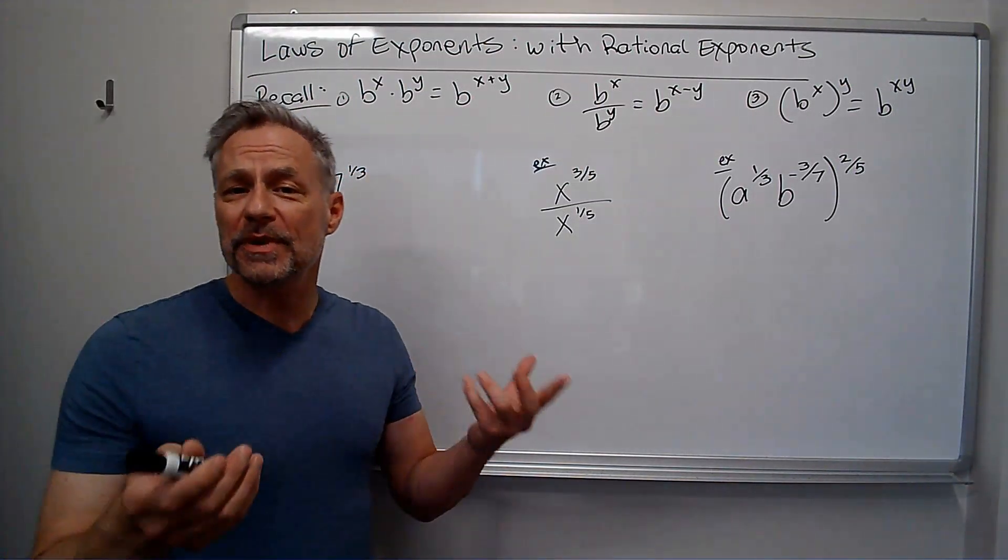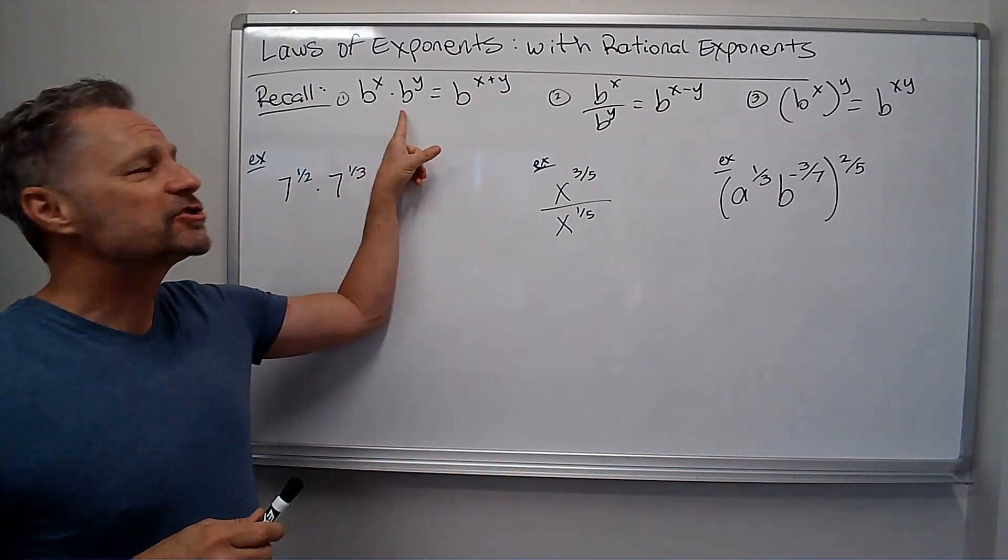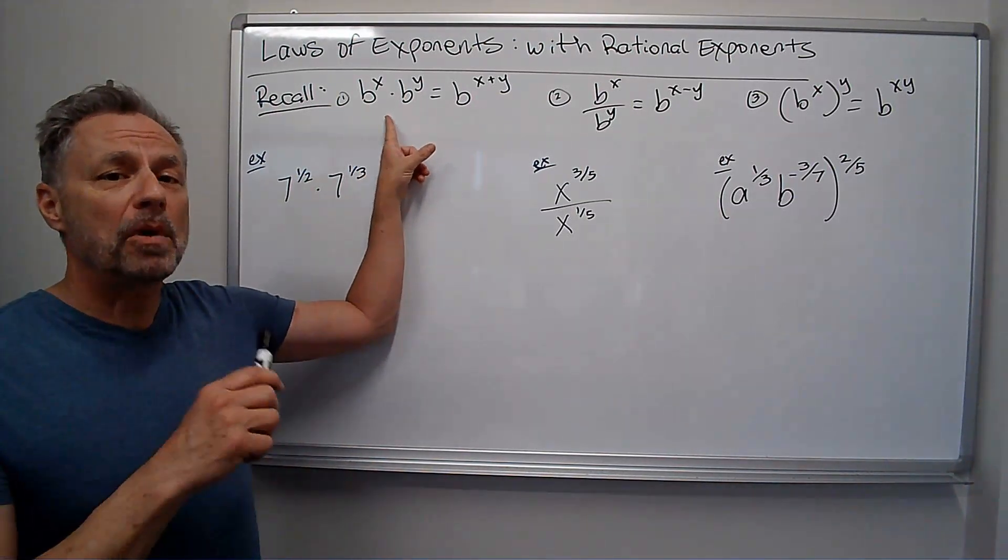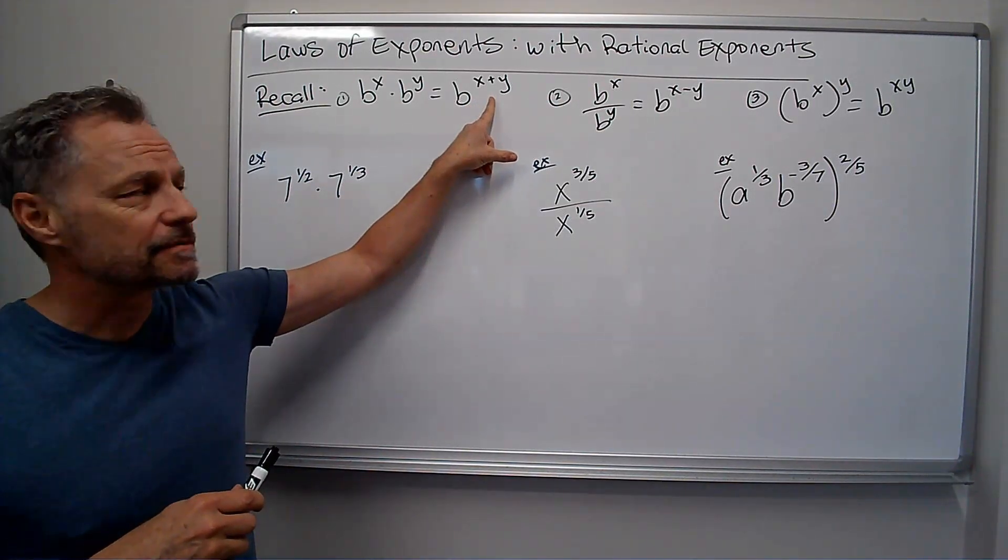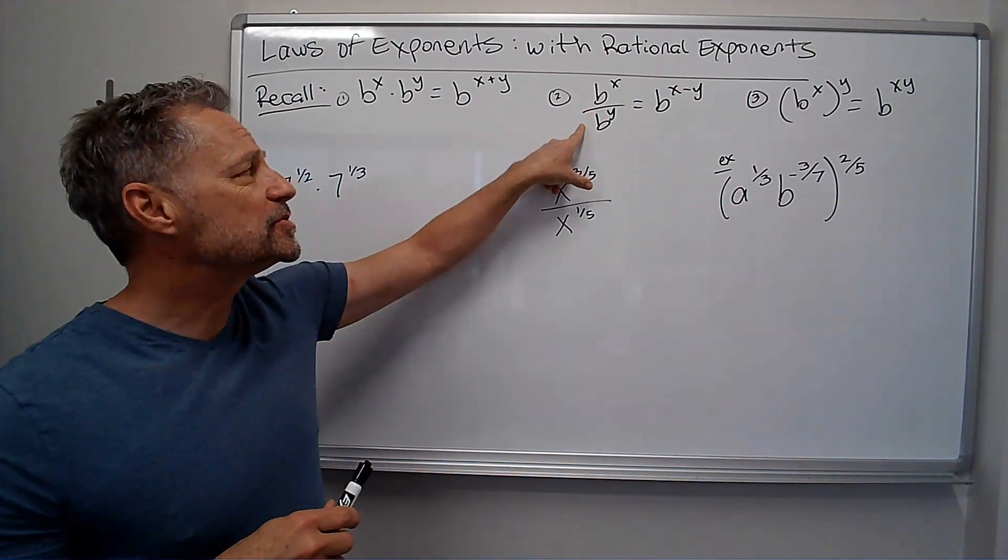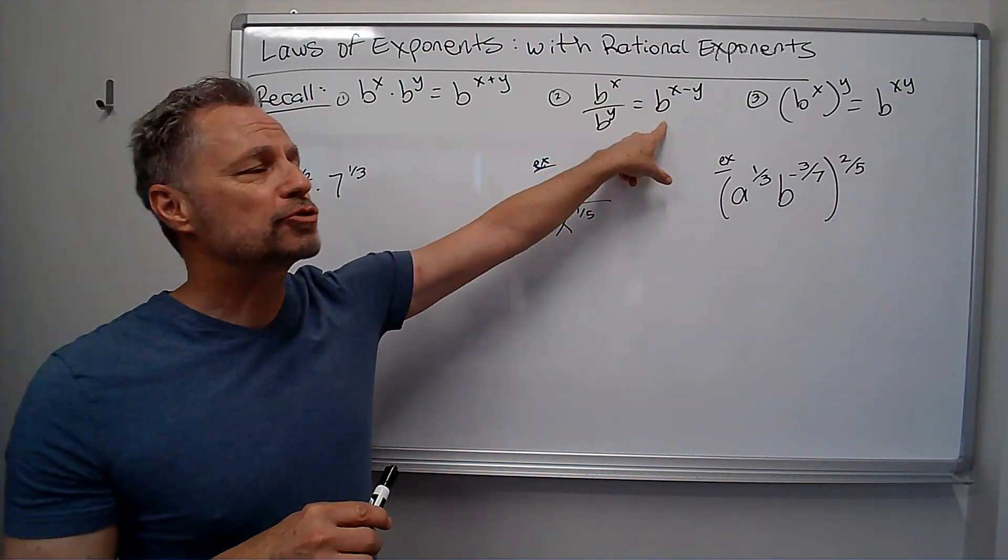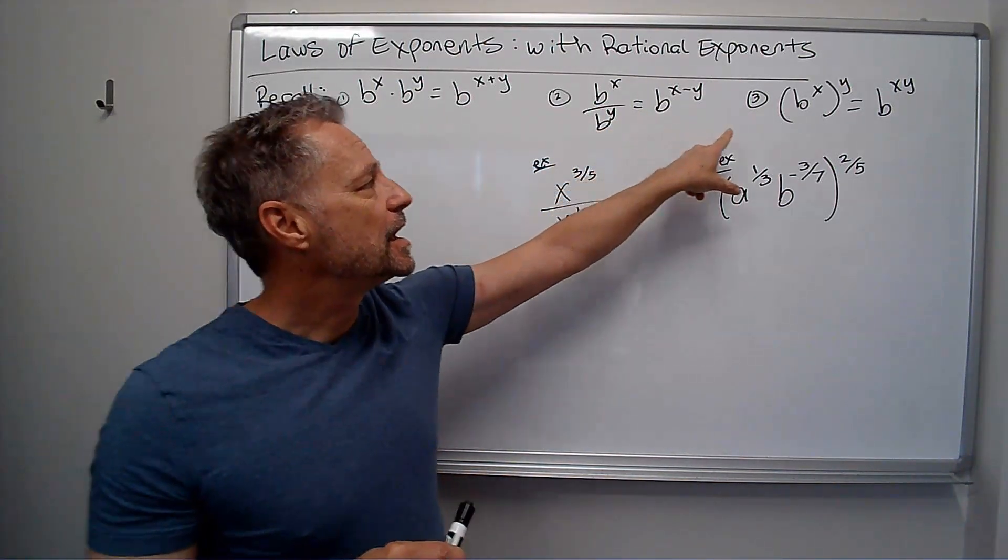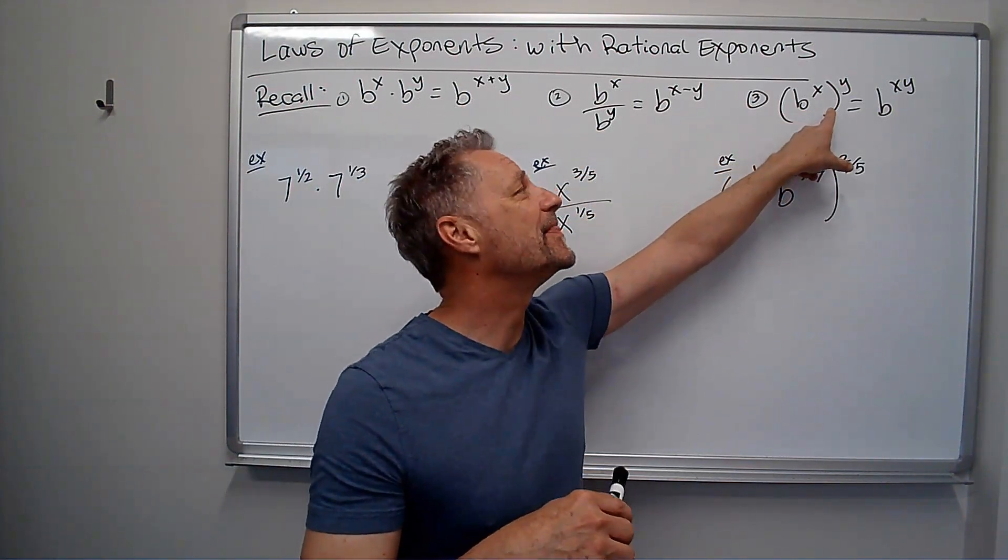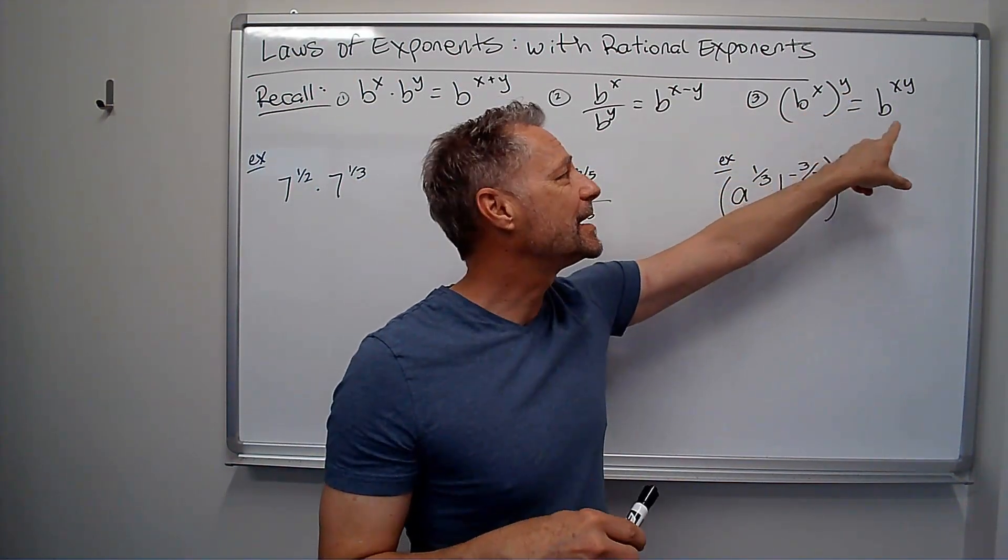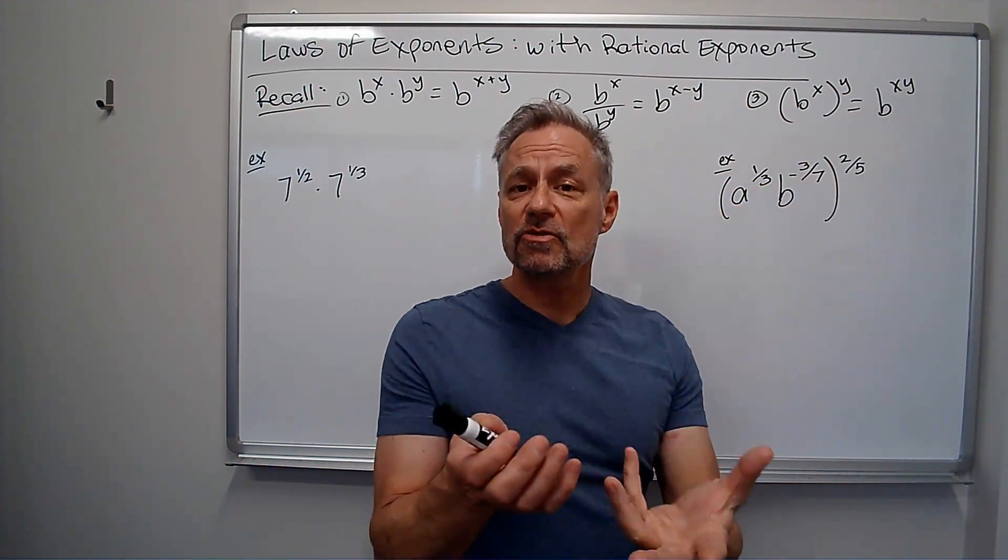So three of the laws we've seen before, just a quick review. If I have two numbers with the same base and I'm multiplying them, I keep the base and I add the exponents. If I have two numbers with the same base and I'm dividing, I subtract the exponents. And if I have some base raised to a power, and then that whole thing is raised to a power, I keep the base and I multiply the exponents. So those are our rules.